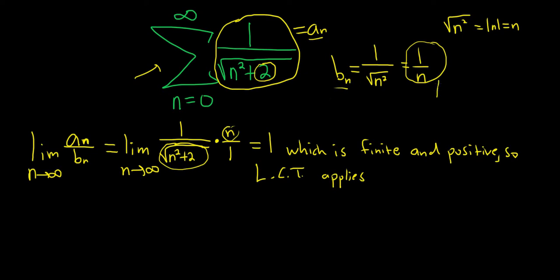So if the sum of the b's converges, then our original series converges. If the sum of the b's diverges, then our original series diverges. Let's go ahead and investigate the sum of the b's.